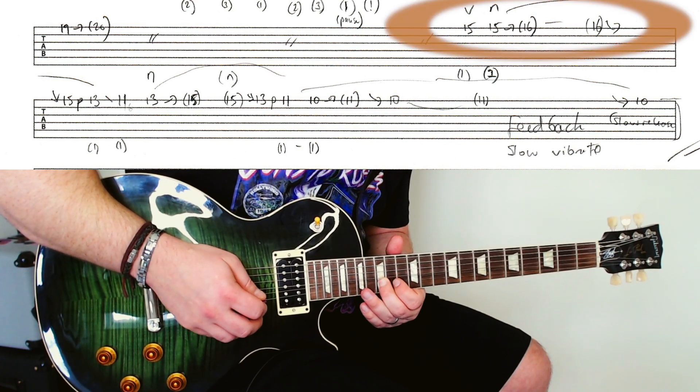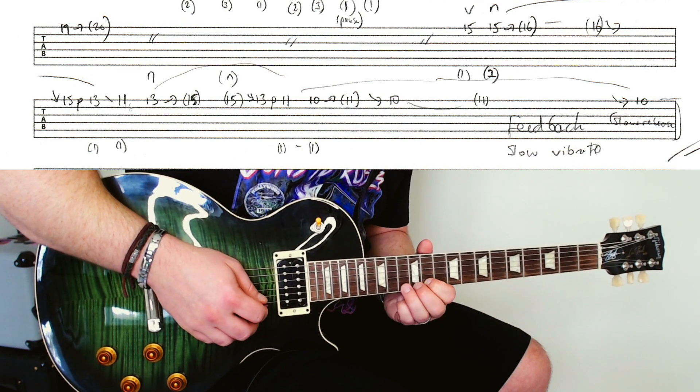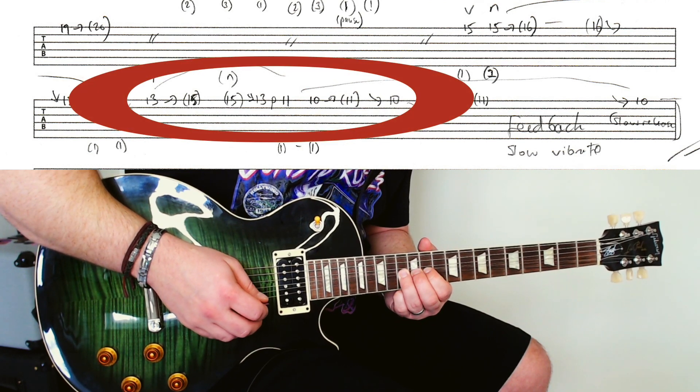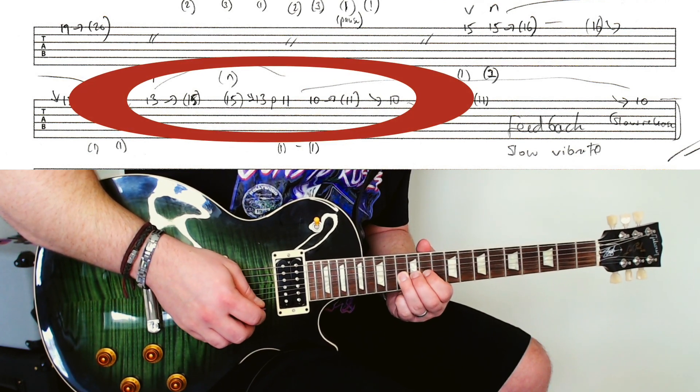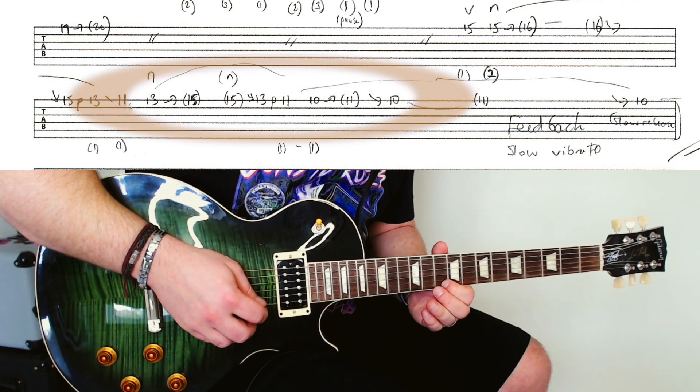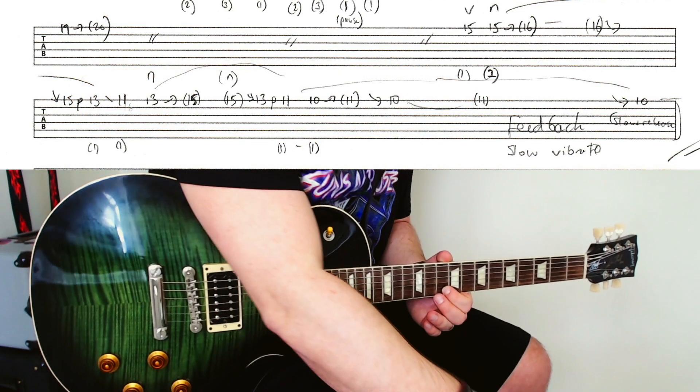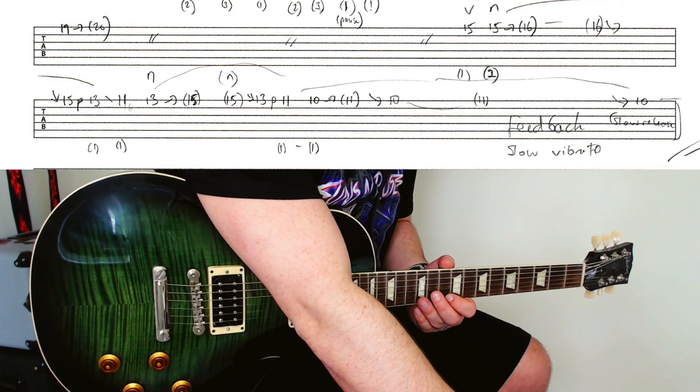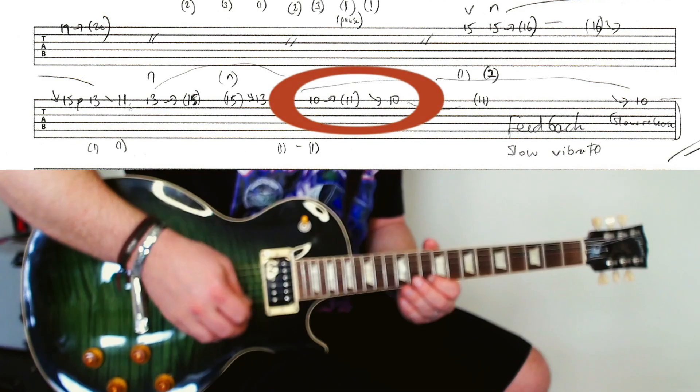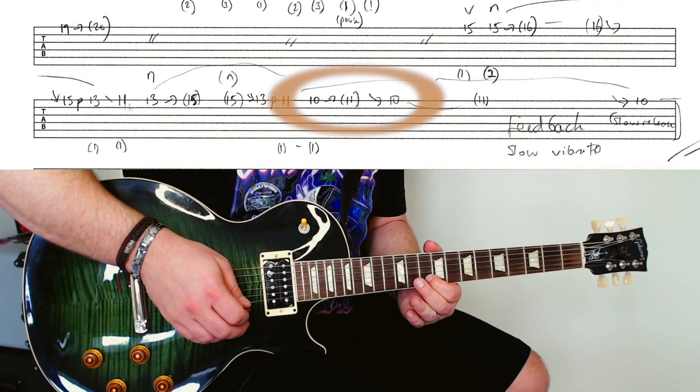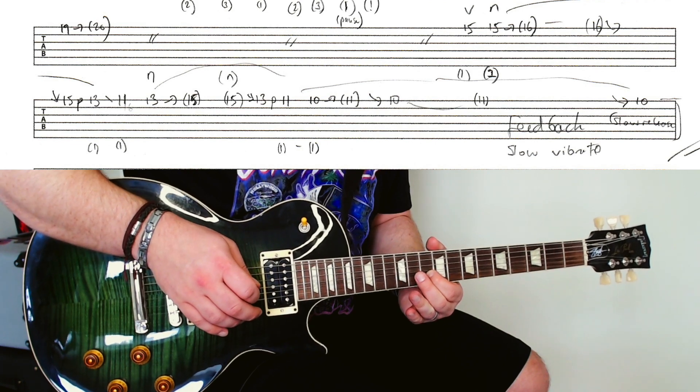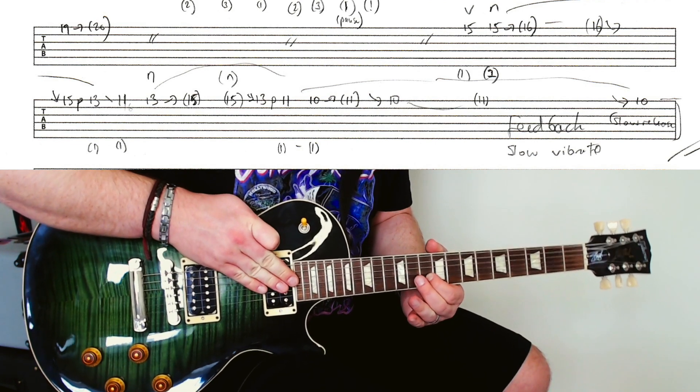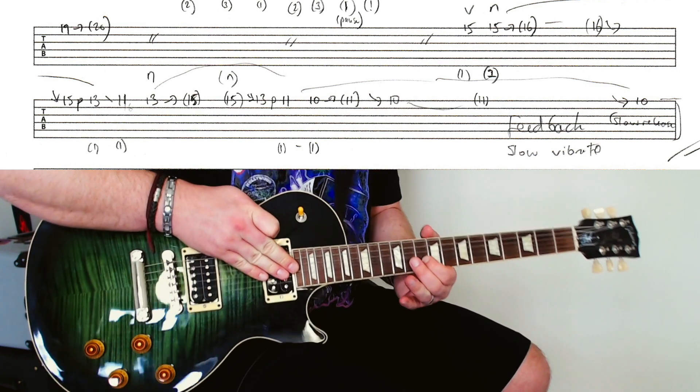Up, pick. Slide down to the 11th. And you can pick this again if you want to here. You can use the first finger for that last one there. And you need to do a little bit of feedback there, which means that you need to go and stand next to your amp.